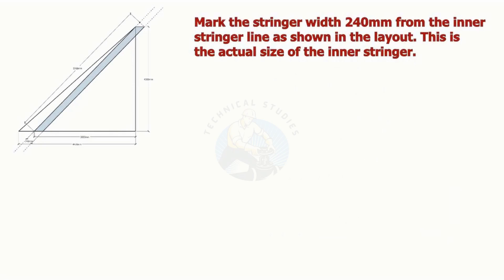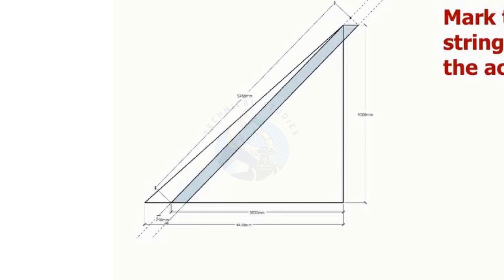Mark the stringer width, 240 millimeters, from the inner stringer line, as shown in the layout. This is the actual dimensions of the inner stringer.